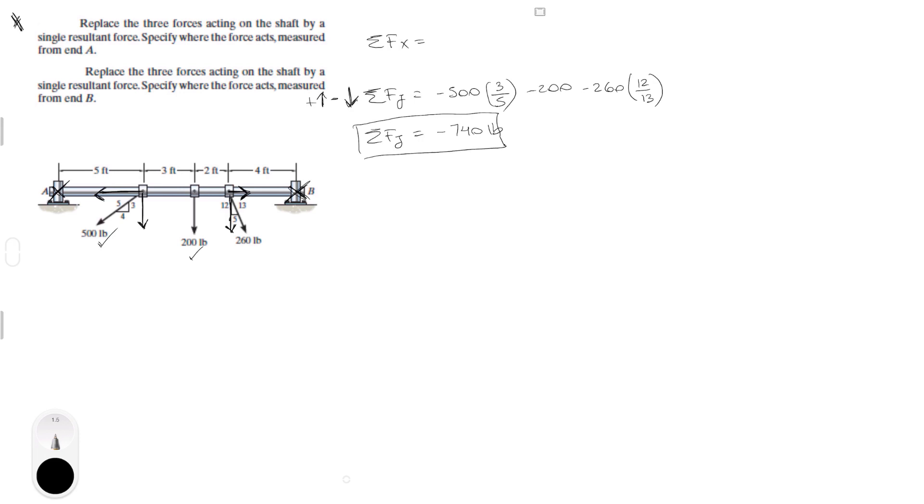Now some of the forces in the X are minus 500, assuming that right is positive and left is negative, minus 500 times 4 over 5 for this one, plus 260 times 5 over 13 for this one. Now this one is going straight down, so it has no X component. And that gives you minus 300 pounds for the X component.